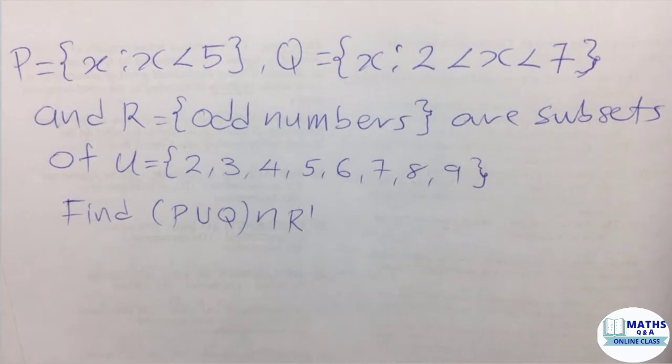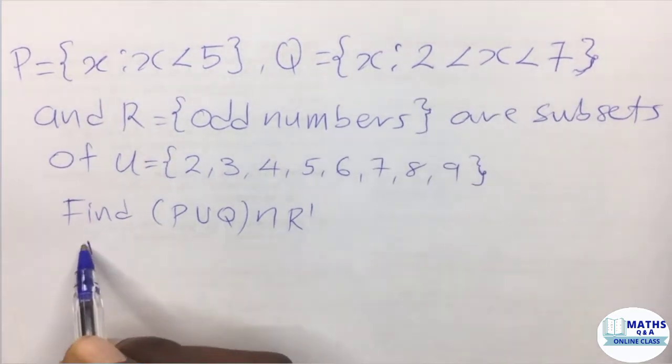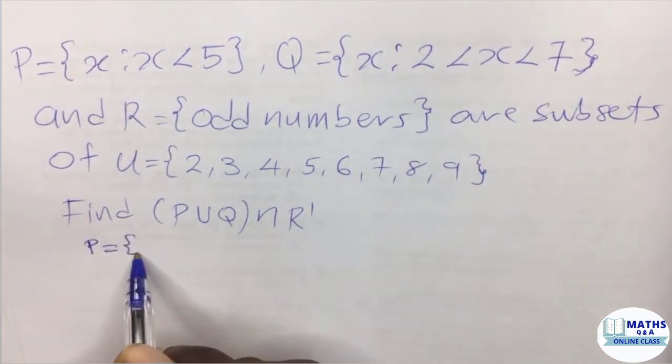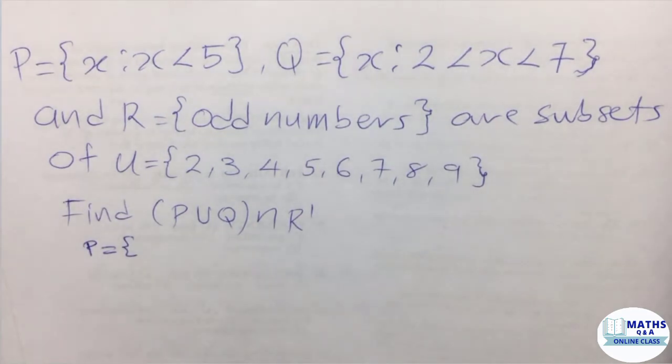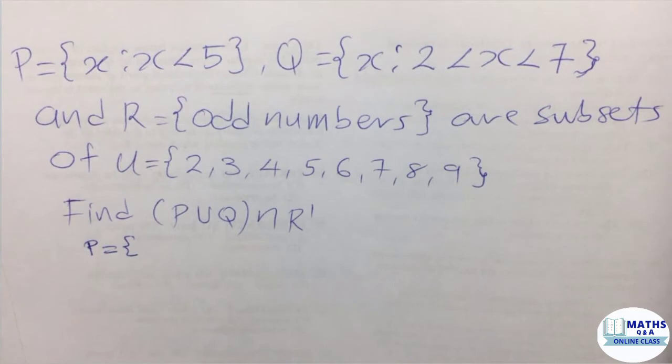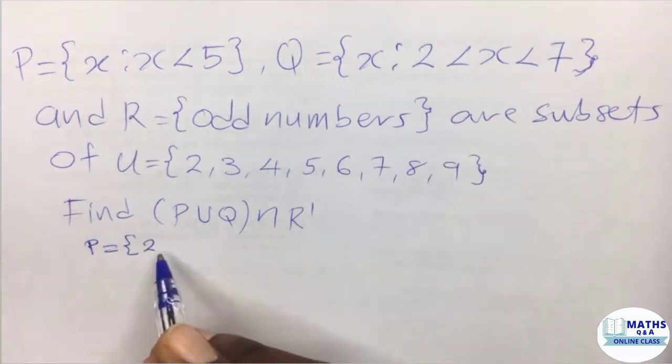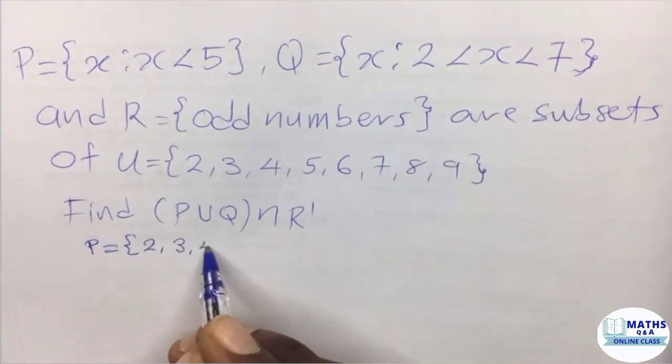If we need a set of elements in set P, and it's saying that it is the elements that are less than 5, then we go back to the universal set and look for elements that are less than 5. We can see that 2 is less than 5, 3, and then 4.